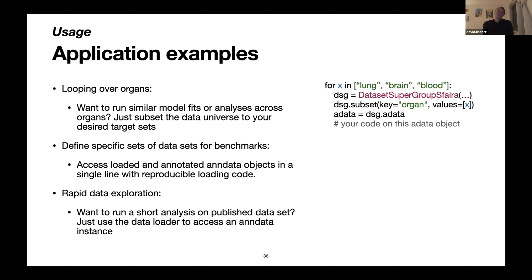Lastly, because you don't have to worry about finding download websites or figuring out what format somebody decided to upload data in, you could look at public data sets more often. Say you're working on human heart and there are 10 data sets out there — before you might have restricted yourself to three, but now because the loading code is so easy, you can really easily run queries like looking at the maximum expression of some gene in a cell type across all available data sets in that setting. This is just some inspiration for how Sphira could be useful for you.